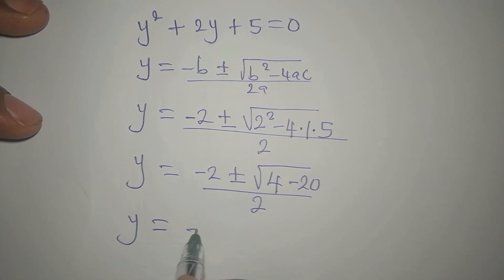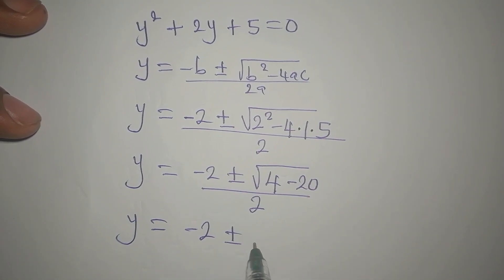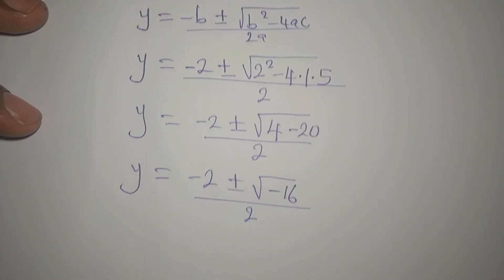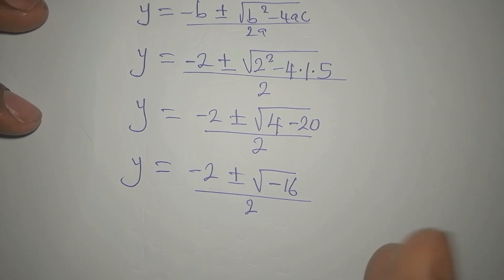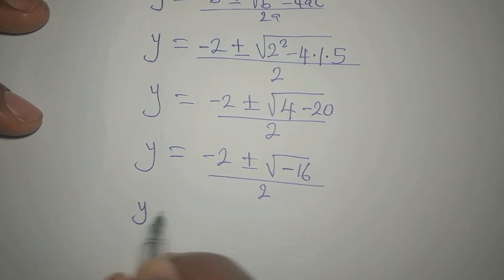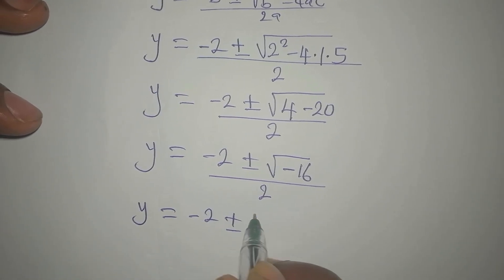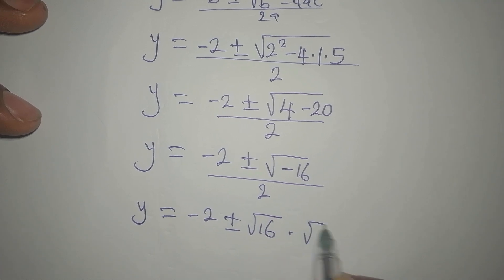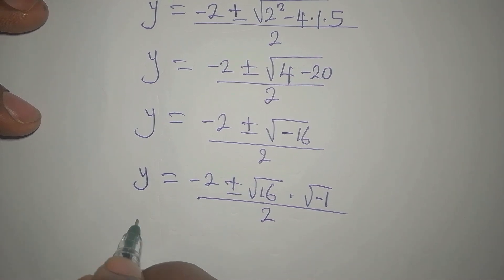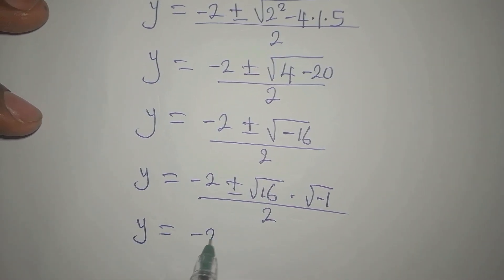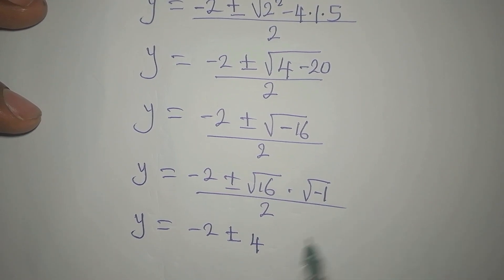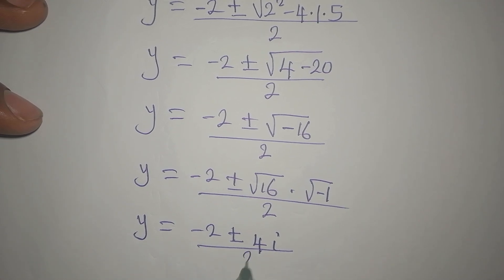So Y equals negative 2 plus or minus square root of negative 16, divided by 2. To find the square root of negative 16, we split it: square root of 16 times square root of negative 1. That gives us 4i. So Y equals negative 2 plus or minus 4i, divided by 2.